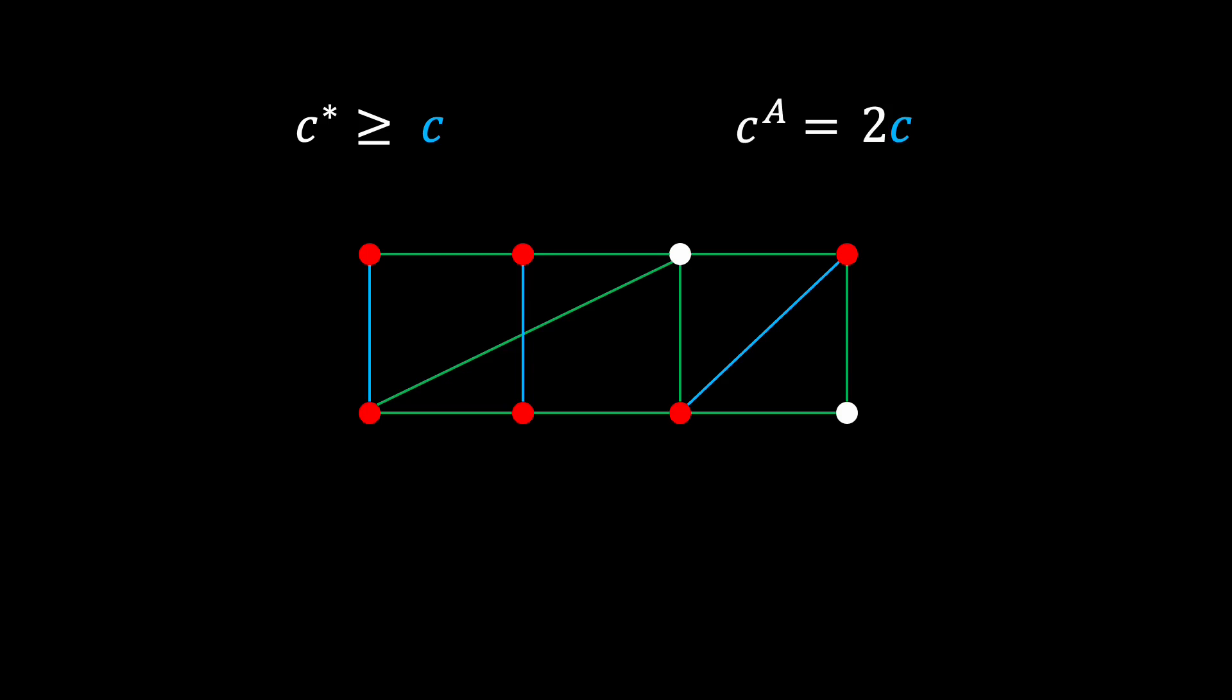If we combine these results, we find that the approximation ratio of our modified algorithm is less than or equal to 2.